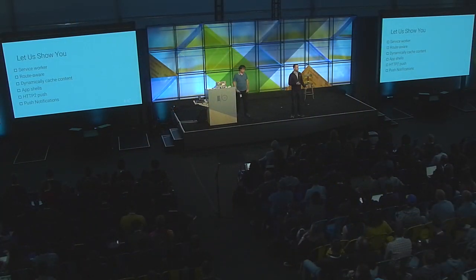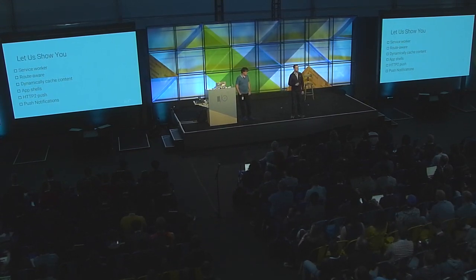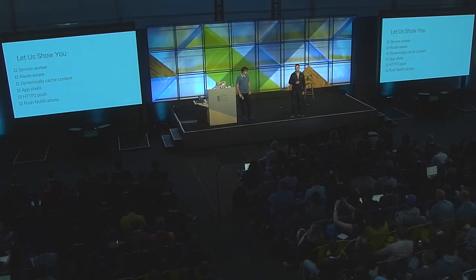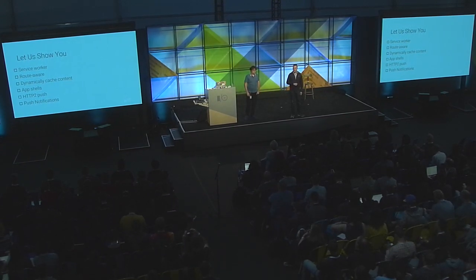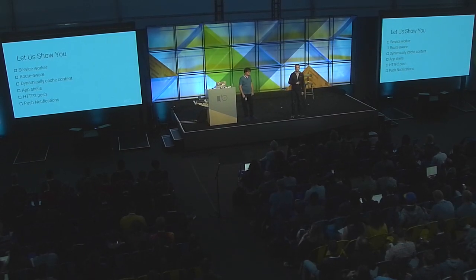Today in our demo, we're going to take a static CLI application and add a ServiceWorker to it, make it route-aware, cache dynamic content, add an app shell to increase perceived performance, increase performance again with HTTP2 push, and finish by making things more engaging with push notifications. With that, I'll hand it over to Alex.